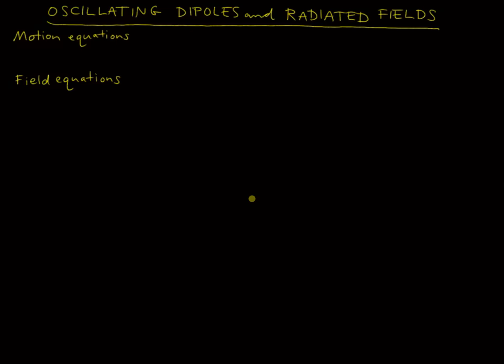There are many times in physics that you want to figure out what's going to happen in a situation based on derivatives, and that's going to be really important as we study how light is radiated by atoms.